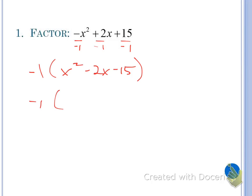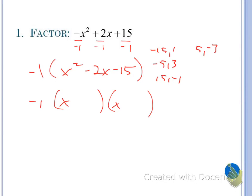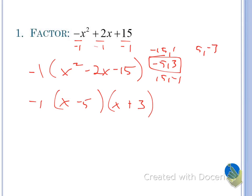When we factor out the negative one, we divide all terms by negative one and get x squared minus 2x minus 15. Then we're ready to factor that trinomial into two binomials. We factor x squared into x and x. Because the lead coefficient is just 1, we're really looking for factors of negative 15 — negative 15 and 1, negative 5 and 3, 15 and negative 1, and 5 and negative 3 — that add to negative 2. We can see right away it's negative 5 and positive 3, so we get (x minus 5)(x plus 3).